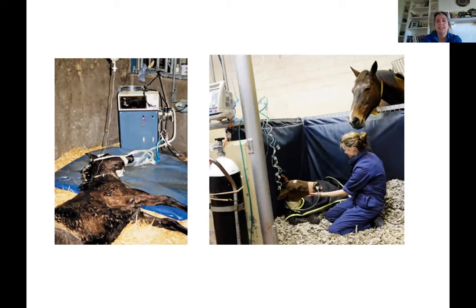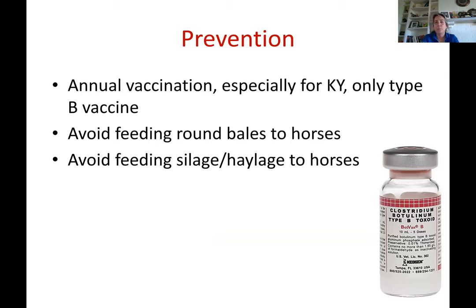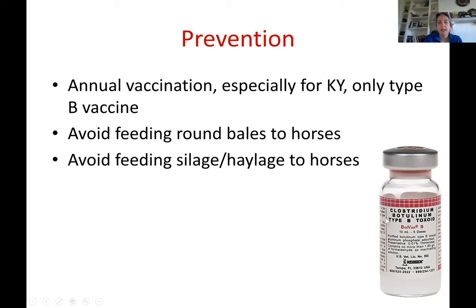Prevention through management is critical. In Kentucky, broodmares are commonly vaccinated for type B botulism because of shaker foal syndrome and the volume of foals raised annually. However, vaccination is advisable for all horses in Kentucky — show horses, pasture pets, any horse. The type B botulism vaccine costs approximately $25 per dose, starts with a three-dose regimen, and then requires an annual booster. Avoid feeding round bales without proper monitoring and management.